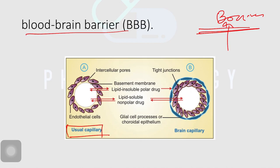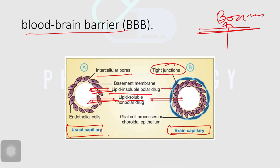Usual capillaries are made up of endothelial cells, and between the cells there are intercellular pores. So both lipid-soluble and lipid-insoluble drugs can pass through these pores. But in the brain capillaries, the blood-brain barrier has endothelial cells that are very tightly junctioned — extremely tight — so there are no more intercellular pores. Secondly, they have an additional layer of choroidal epithelium. Tight junctions plus choroidal epithelium means only lipid-soluble drugs can pass through — lipid-insoluble drugs cannot pass through this brain barrier.